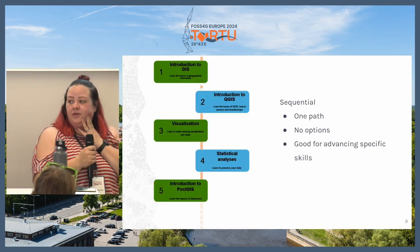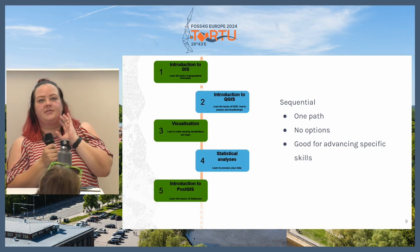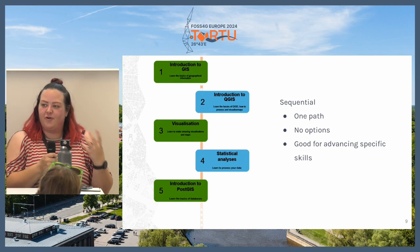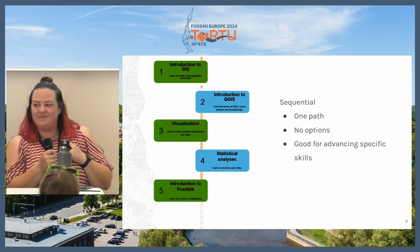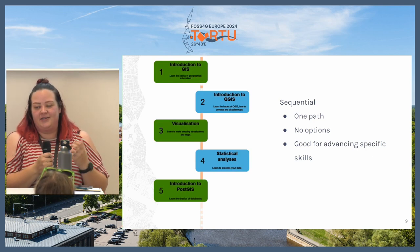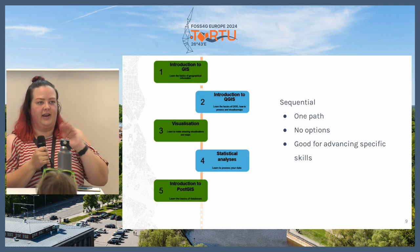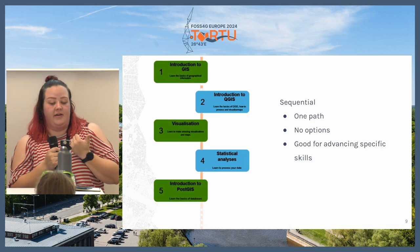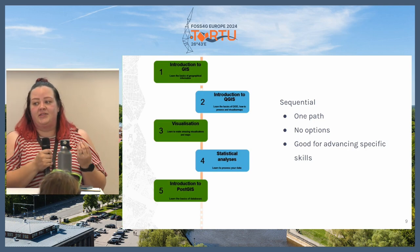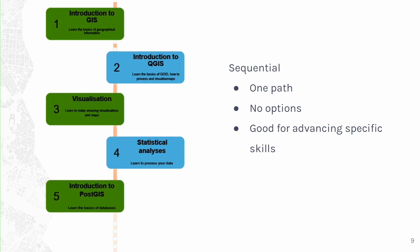Here's an example of a sequential path — not specifically our courses, but something quite similar. In a sequential path there is just one path you need to go through to complete all the courses, with no different options to jump into. These are very good for advancing special skills. For example: introduction to GIS if you don't know anything about geospatial, then QGIS, maybe some visualization, then statistical analysis, and then perhaps PostGIS to introduce your data.